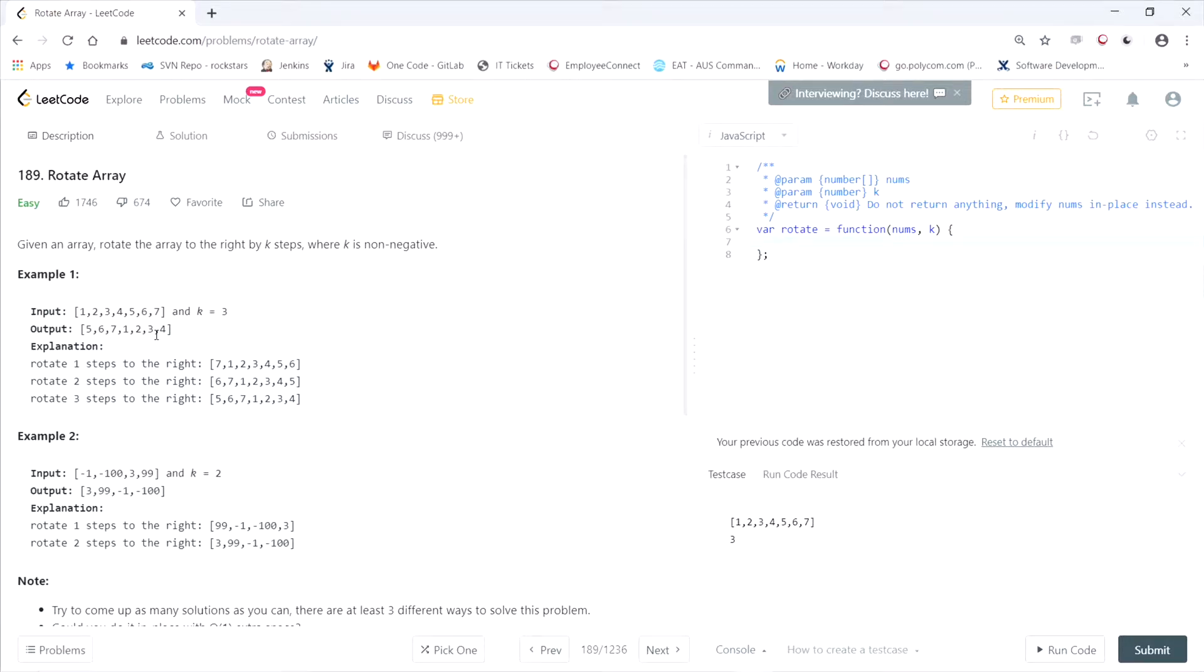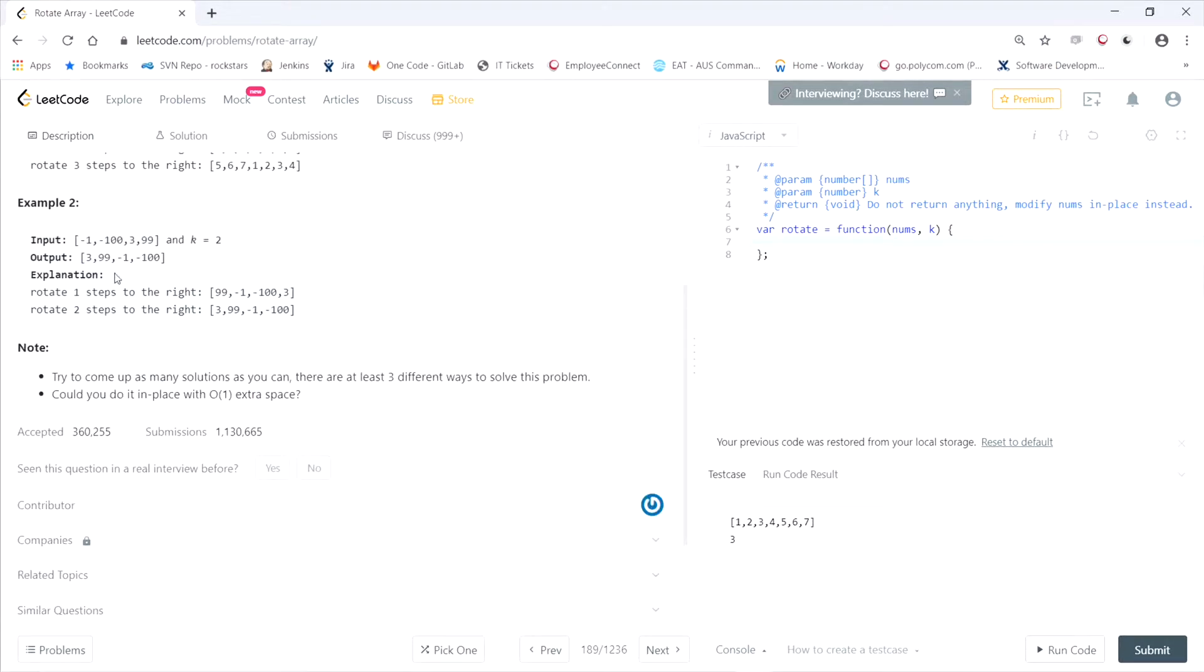And the second example is an array negative 1, negative 100, 3, and 99, and it needs to be rotated twice. So 99 would go in the front and 3 would go in the front of that, giving us 3, 99, negative 1, and negative 100.